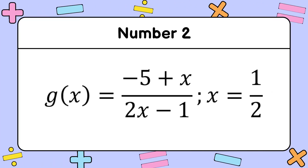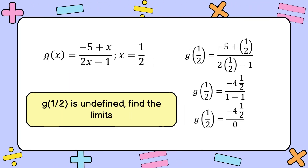For our next item, we have the function g of x equal to negative 5 plus x over 2x minus 1, given x is equal to 1 half. Evaluating by substituting 1 half for all x: negative 5 plus 1 half over 2 times 1 half minus 1 equals negative 4 and 1 half over 0, which is undefined.